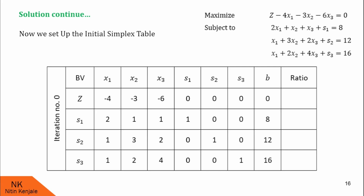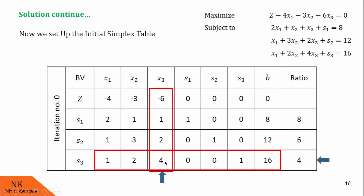In the next step, we have to select the key column. The key column is the column in which the z coefficient is the smallest negative number. Here, the smallest negative number in the z coefficients is minus 6, so we select that column as the key column. We divide the RHS of constraints by the key column elements: 8 divided by 1 is 8, 12 divided by 2 is 6, 16 divided by 4 is 4. We select the smallest positive ratio, mark that row as the key row, and the intersection element is the key element. The variable at the left of the key row is the outgoing variable, and the variable at the top of the key column is the incoming variable. So s3 leaves and x3 enters.